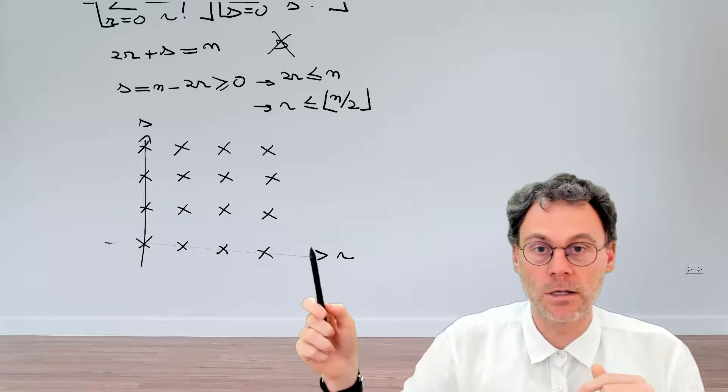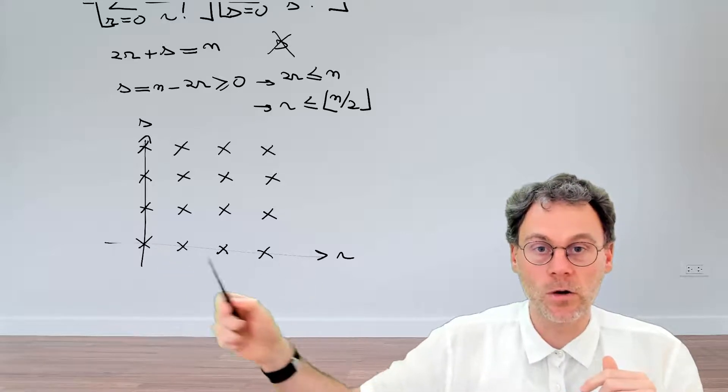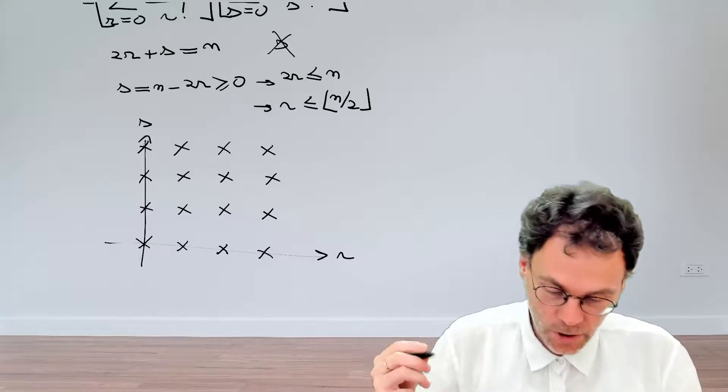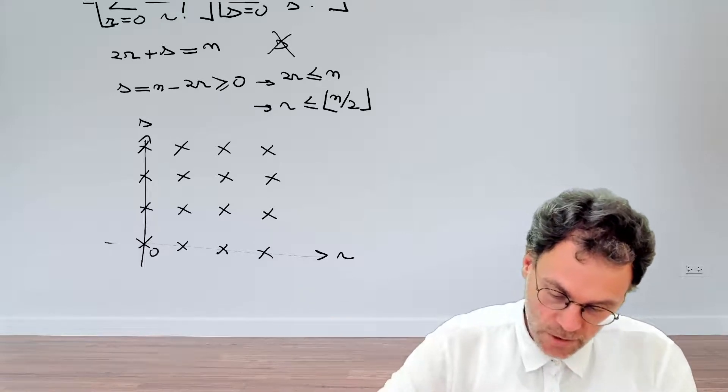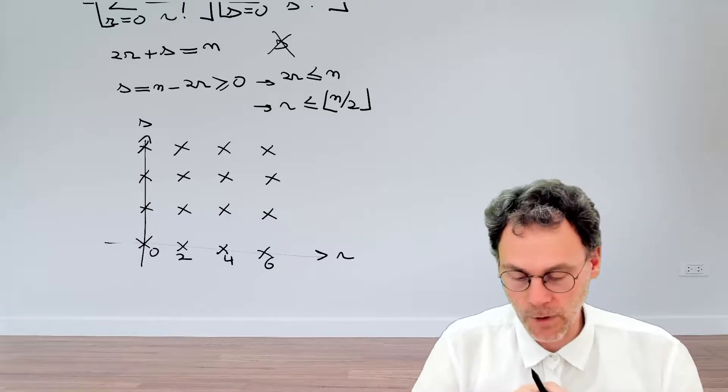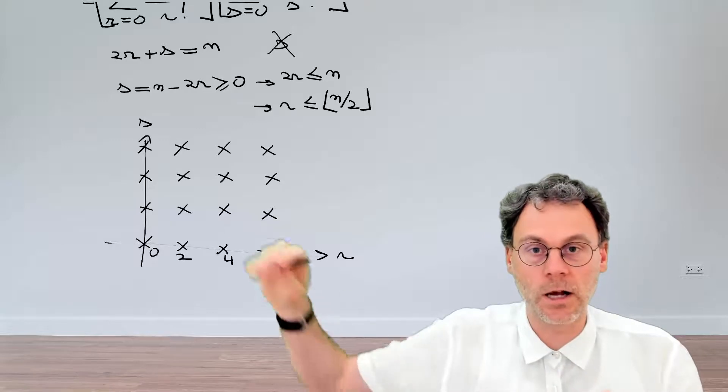Well, let's first have a look at this line over here, where s is equal to 0. So n will just be 2r. So we will have 0, 2, 4, 6. These are the n values for the first line here.